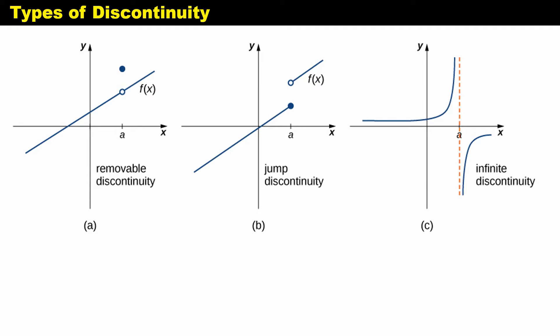Under the removable discontinuity, we have the missing point discontinuity. Graph letter A on your screen is a type of removable discontinuity — particularly it is called the missing point discontinuity. We also have jump discontinuity, shown in graph letter B, and infinite discontinuity is shown in graph letter C with a vertical asymptote.